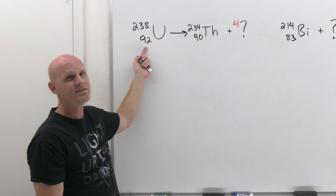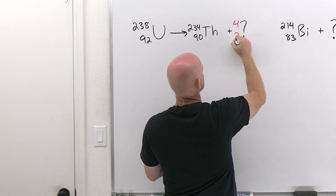Similar with the atomic number, we've got a total atomic number of 92 on the left-hand side of the arrow. So on the other side, 90 plus what is going to add up to 92? Well, 90 plus 2.